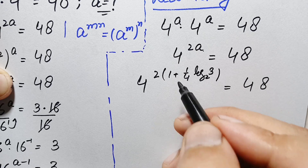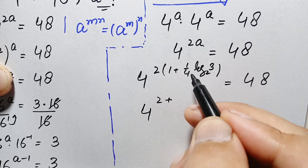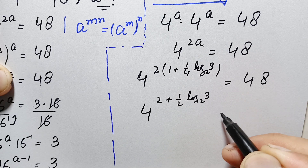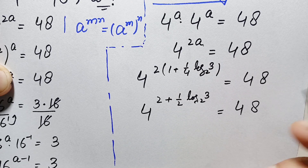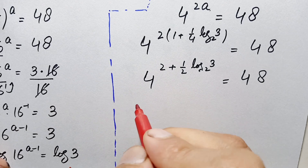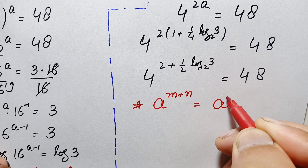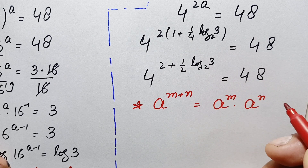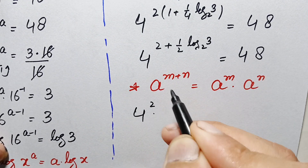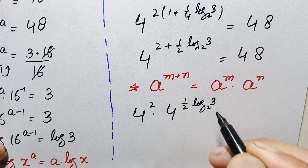We multiply the 2 inside the power: 2 times 1 is 2, and 2 times one-fourth gives one-half. So the expression becomes 4 raised to power 2 plus one-half times log base 2 of 3 equals 48. On the left hand side we use the exponential identity: x raised to power (m plus n) equals x raised to power m times x raised to power n.